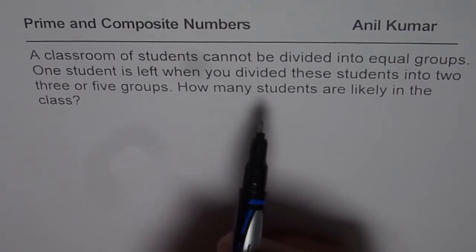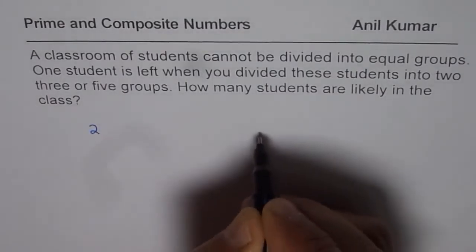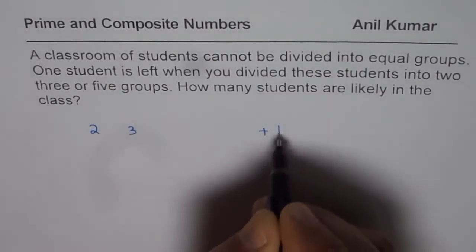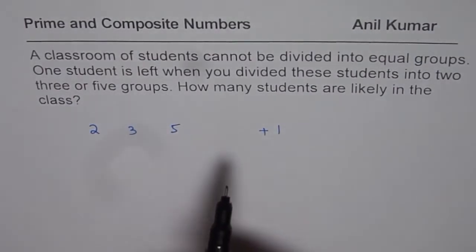When you are dividing the group into two groups, you are left with one. Even when you divide into three groups, you are left with one. And also, if you try to divide them into five groups, you are left with one.